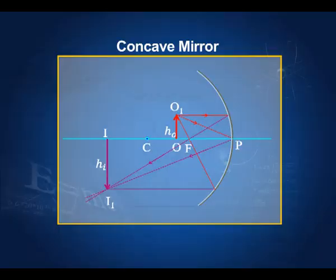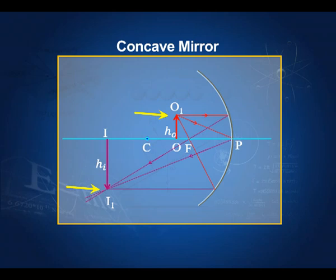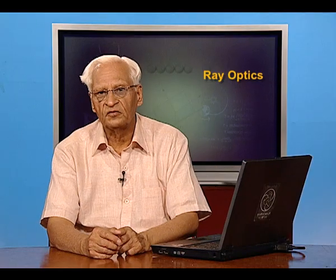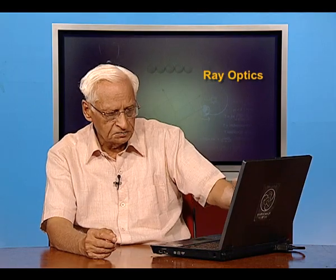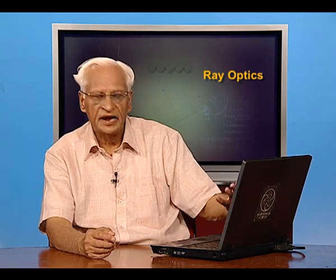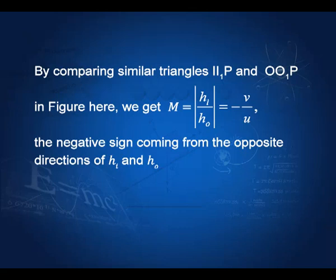To convey the ideas visually: the object has height h_o from the axis, and the image has height h_i from the axis. By comparing the triangles, you get m = h_i / h_o in magnitude. The sign is negative because the image is measured downwards while the object is measured upwards — one is positive, the other negative, so the ratio is negative. Therefore, magnification is also expressed as m = −v/u, which you can derive by comparing the appropriate triangles.